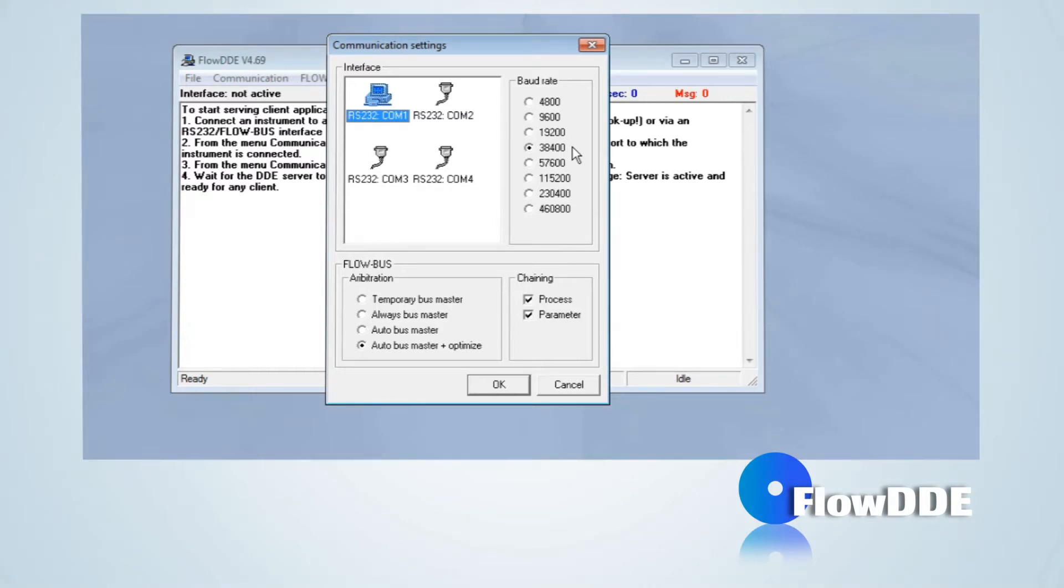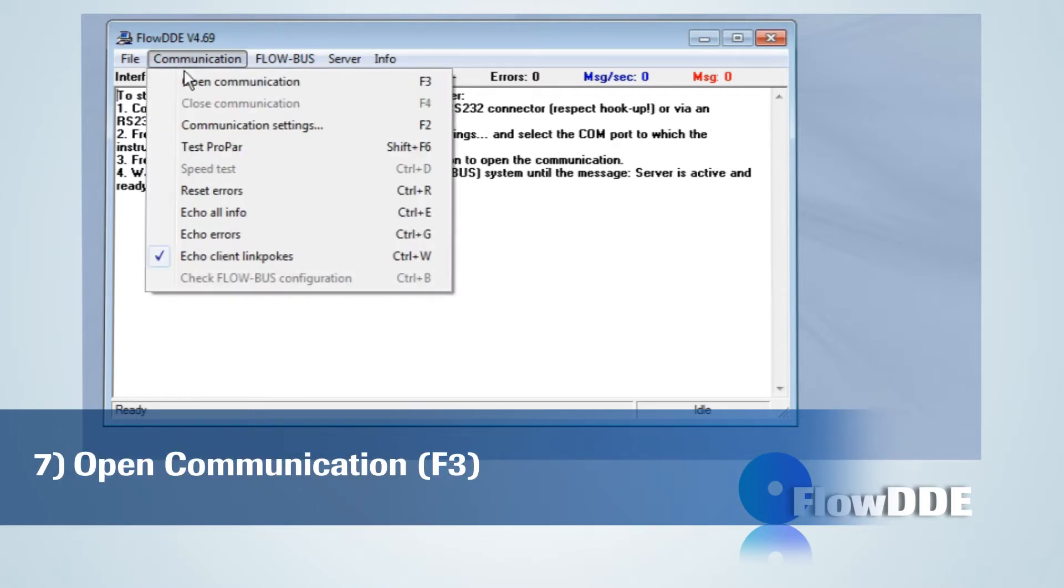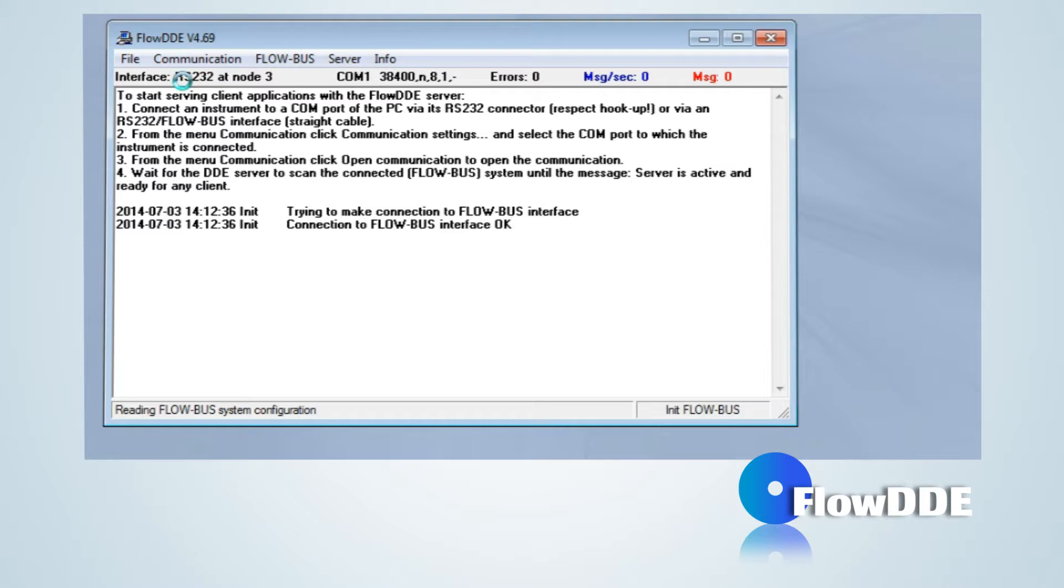Once the communication settings have been configured correctly, the communication to the instrument can be started and instrument values can be used by client applications. From the menu, click Communication, Open Communication.